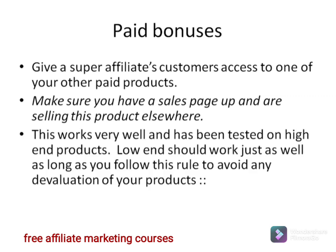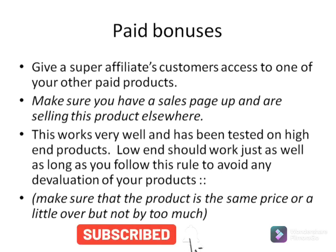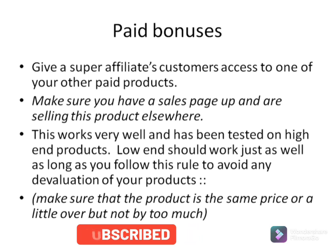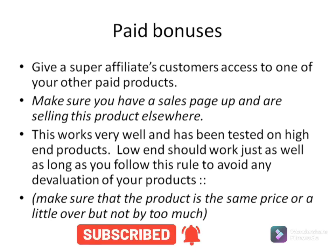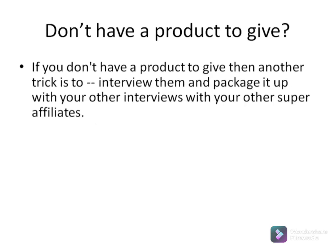This works very well and has been tested on high-end products. The low end should work just as well, as long as you follow this rule to avoid any devaluation of your products. That rule is to make sure that the bonus product is the same price or a little over, but not too much. So if your product is a $97 product, you probably want a bonus that's $97 to $200 — a maximum of double the amount. If you have a lower-priced product, you might want to bundle a couple products together.